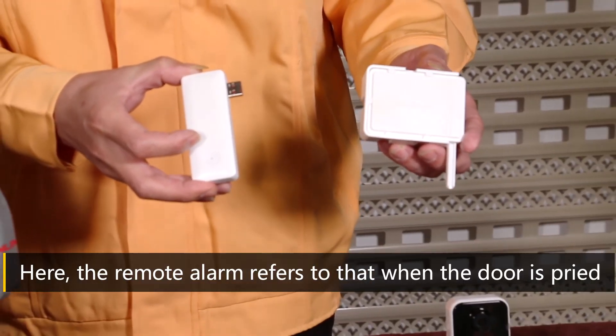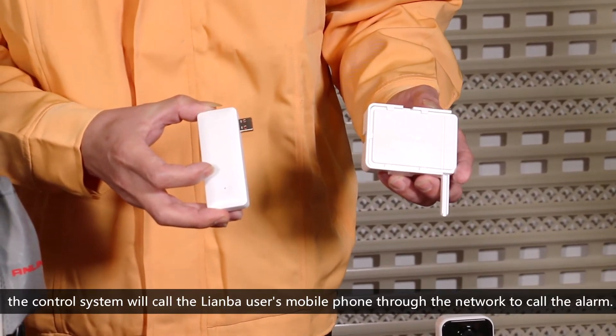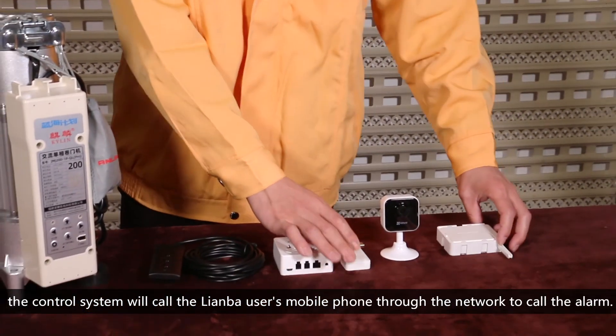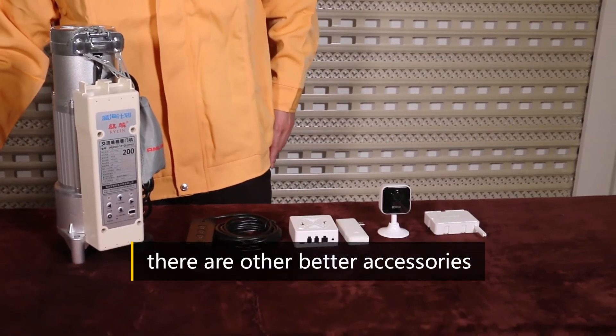Here, the remote alarm refers to that when the door is pried, the control system will call the lien bar user's mobile phone through the network to call the alarm.